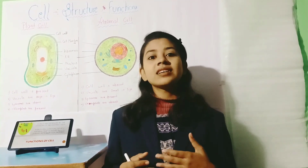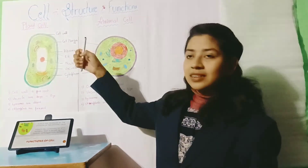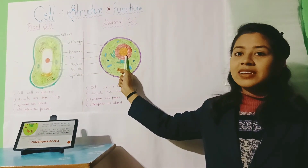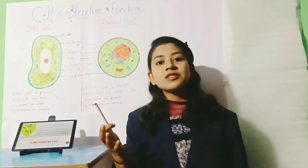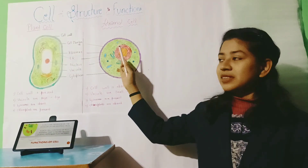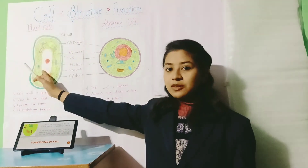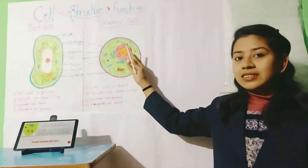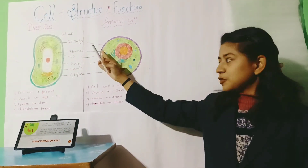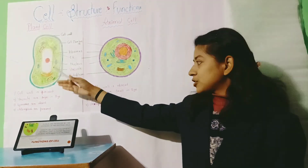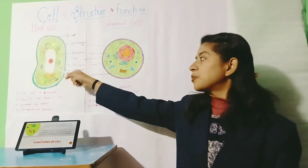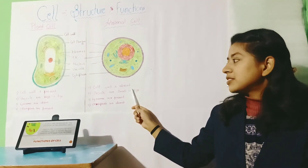There are two types of cells: plant cell and animal cell. What is the major difference between plant cell and animal cell? The major difference is that plant cells have a cell wall but animal cells do not have a cell wall. Also, vacuoles are larger in size in plant cells but smaller in size in animal cells.